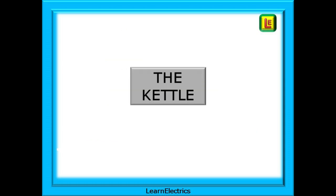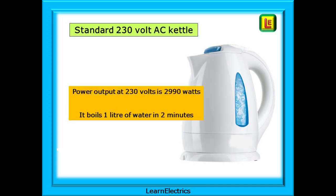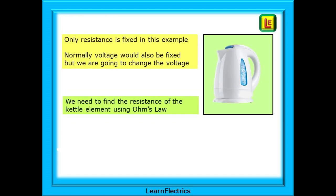Let's take a look at what happens to a kettle as the supply voltage changes. We have a standard 230 volt electric kettle. The rating plate on the bottom of the kettle tells us that at 230 volts the power output is 2,990 watts. I tested my kettle and it took two minutes to boil one liter of cold water from the kitchen tap. In this example, the only thing that has a fixed value is the resistance of the kettle element.